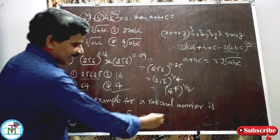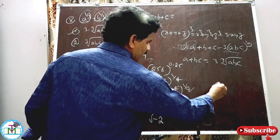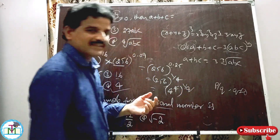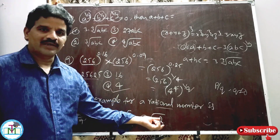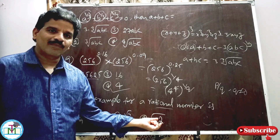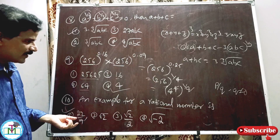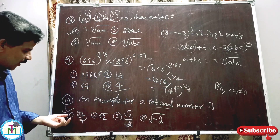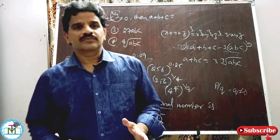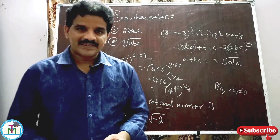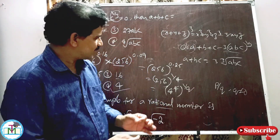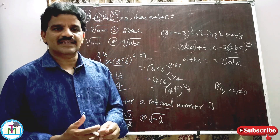Question number 10: Give an example of a rational number. A rational number is any number in the form p/q where q≠0. So 22/7 is a rational number. √2 and √(−2) are irrational and complex/imaginary numbers respectively. Option 1, 22/7, is the right answer.